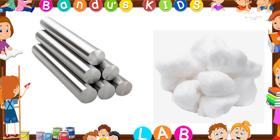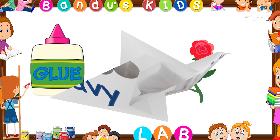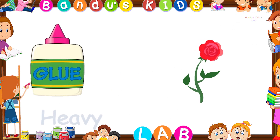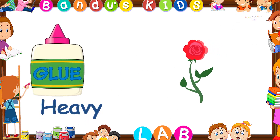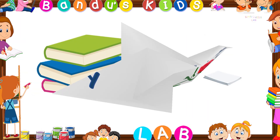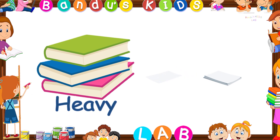Kids, in this picture, the iron rod is the heavy one and the cotton is the light one. Let's look at another example. Here, the glue is heavy and the rose is light. In this picture, the books are heavy and the papers are light.